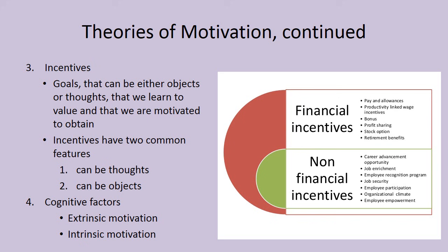Incentives have two common features: they can be thoughts or they can be objects. We can either feel something — like 'I feel really good when I have achieved this goal' — or we can receive a tangible reward like a huge raise for doing a really good job. And then there are the cognitive factors of extrinsic and intrinsic motivation, which we'll talk about in more detail.